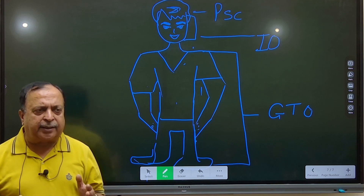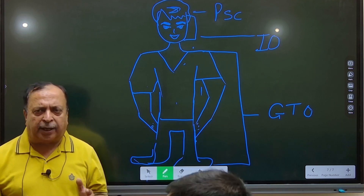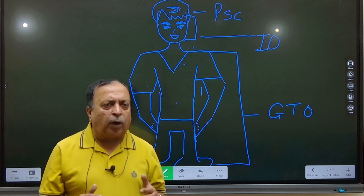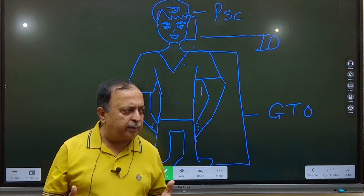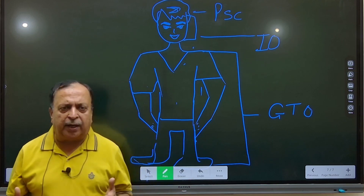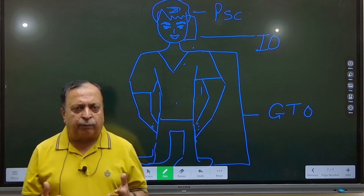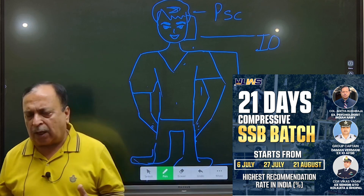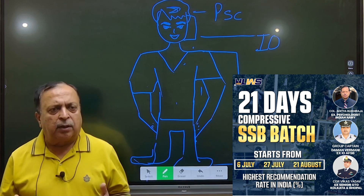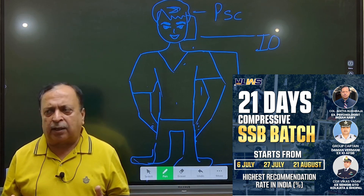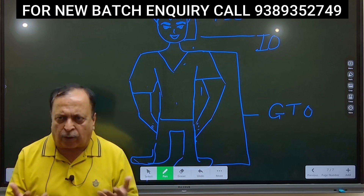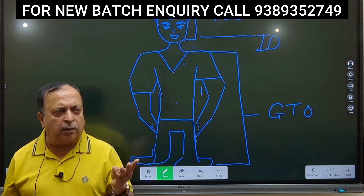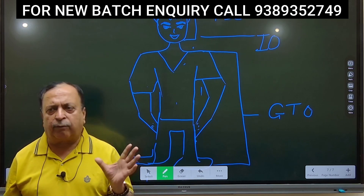The OIR helps determine your average intelligence. In the armed forces, candidates are rated on a scale: OIR 1, 2, 3, 4, and 5.